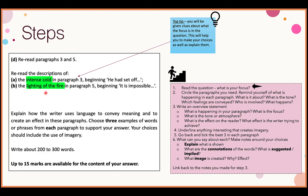The rest of the question asks you to explain how the writer uses language to convey meaning and create an effect. Choose three examples of words or phrases from each paragraph — your choices should include the use of imagery. Write about 200 to 300 words. This is not a literature essay; it's the language paper, so you're not expected to write a full essay. You get 15 marks.